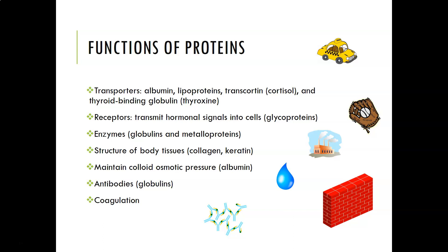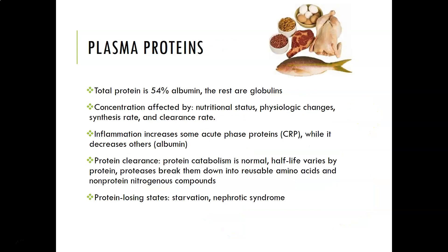There are also receptor proteins on the surface of cell membranes that transmit hormone signals into the cell — glycoproteins are an example. Enzymes facilitate chemical reactions and are usually globulins or metalloproteins. Proteins are also part of the structure of body tissues, such as collagen and keratin. They maintain colloid osmotic pressure — that's the role of albumin, which keeps water where the protein is present, helping maintain blood pressure. Antibodies, which are immune globulins, help fight infections, and proteins are also part of coagulation.